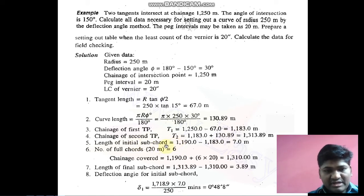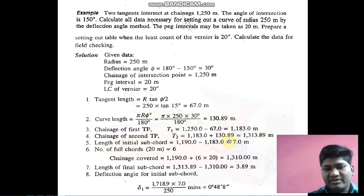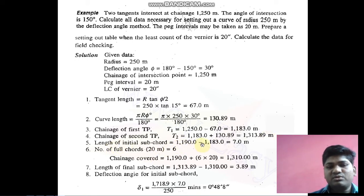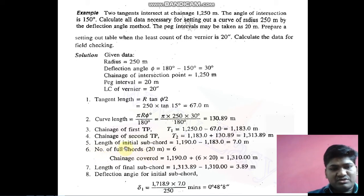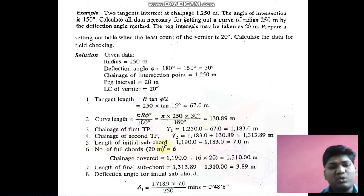To repeat: the formula is round-up chainage of T1 minus exact chainage of T1. The exact value is 1183, so rounded up it becomes 1190. For example, chainage of T2 is 1313.89, which rounds up to 1320. So the length of initial sub-chord is 1190 minus 1183 = 7 meters. For number of full chords, divide the curve length by the peg interval and round down — so if the result is 6.13 or 6.5, we take 6.